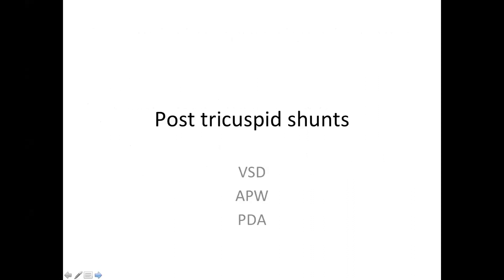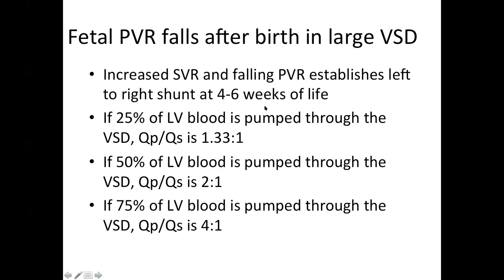Coming to post-tricuspid shunts. There is a question about whether obligatory shunts can Eisenmenger-ize. Obligatory shunts can develop pulmonary vascular disease with PVRI going more than 8 wood units; however, they cannot cause a right-to-left shunt reversal. Eisenmenger syndrome is defined as a shunt lesion where there is reversal from initial left to right to either bidirectional or right ejection causing systemic desaturation, cyanosis, and hypoxia. Such a thing cannot happen in isolated PAPVC — so it is not called Eisenmenger syndrome but rather pulmonary vascular obstructive disease.